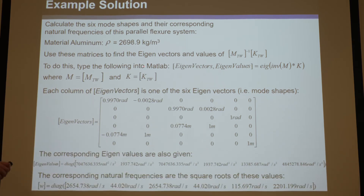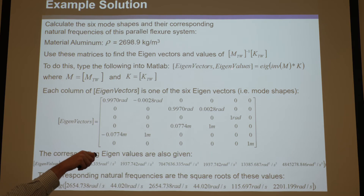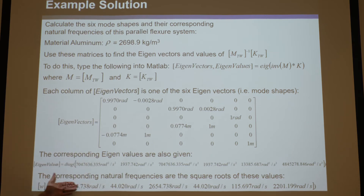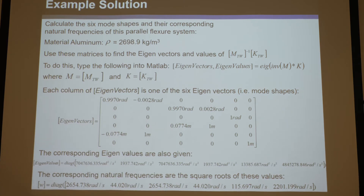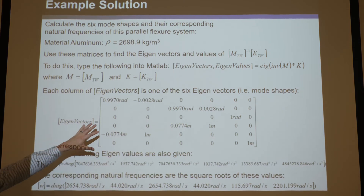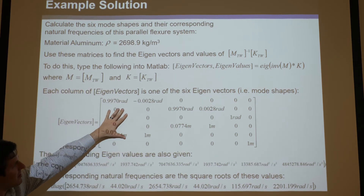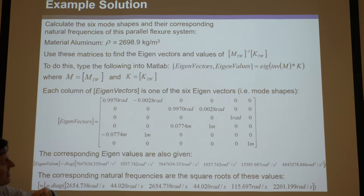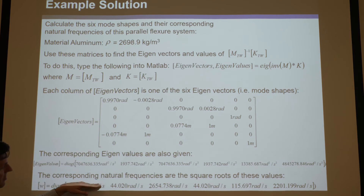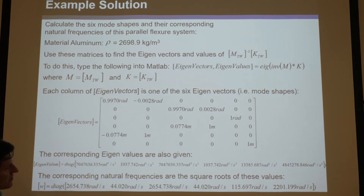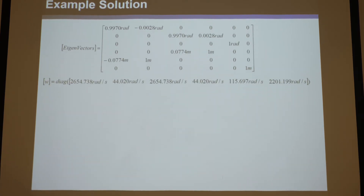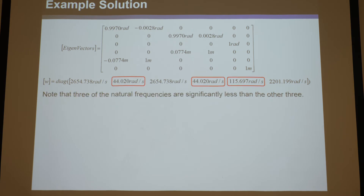After you've done this and it spits out those two things, once you square root the eigenvalues, you get the natural frequencies. So we keep the eigenvectors — these are the mode shapes in twist form — and these are the natural frequencies after taking the square root.